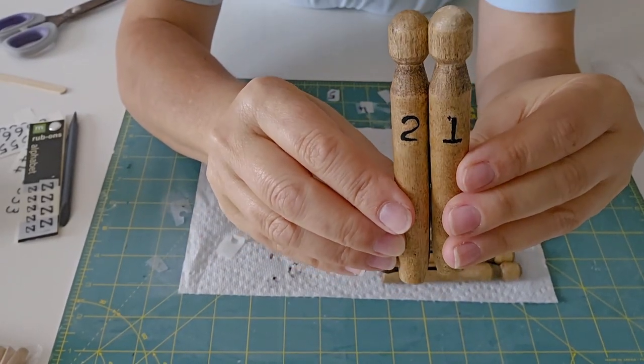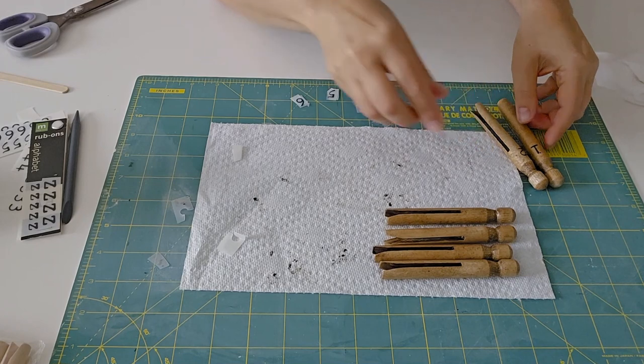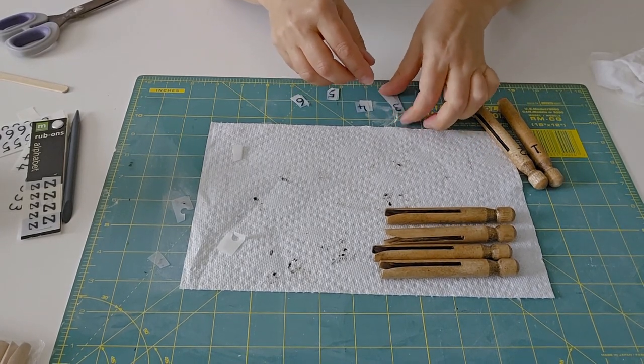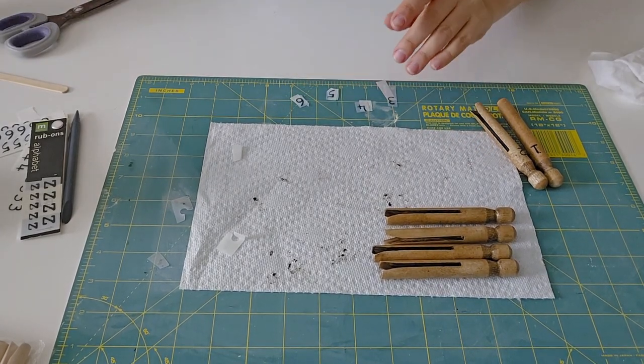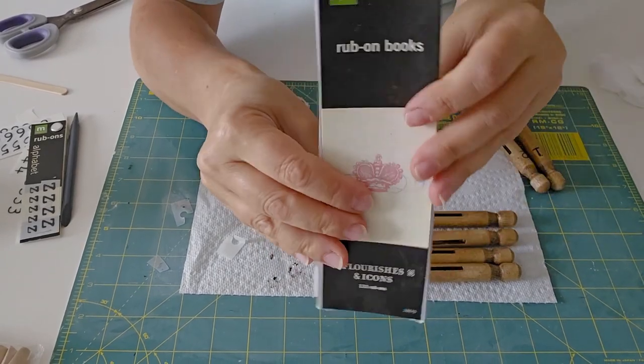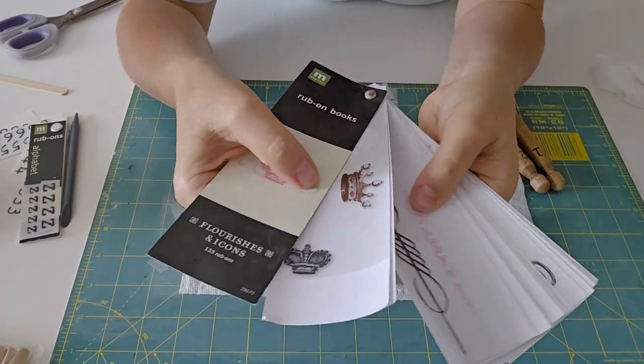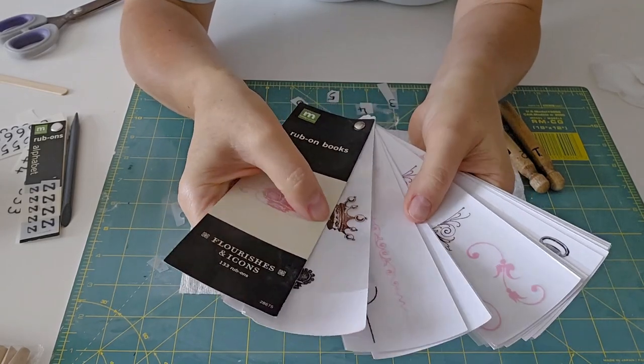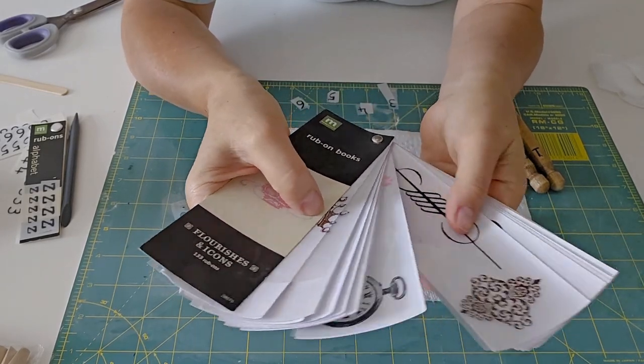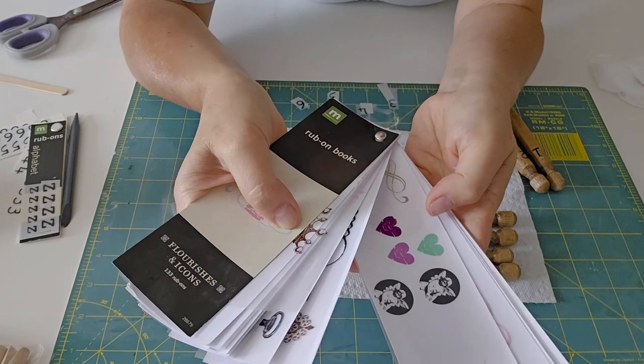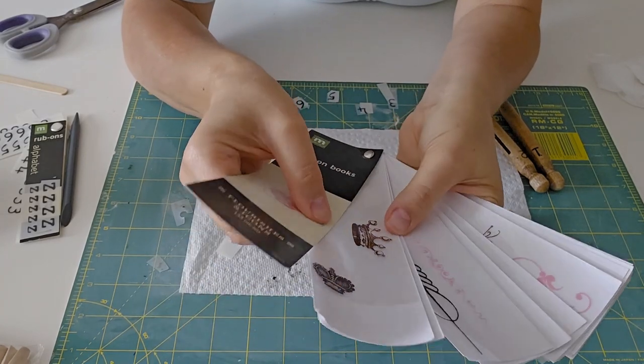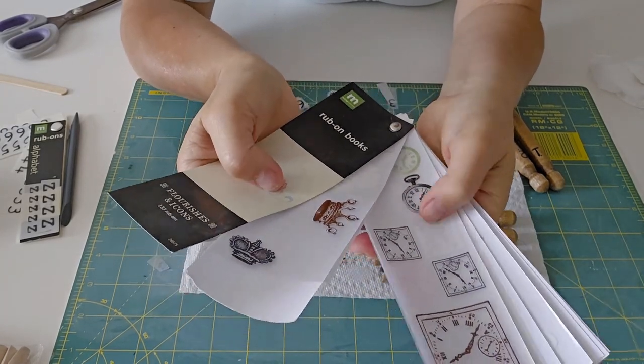One and two, cute right? Now like I said if you find rub-ons that are different or unique, I have this book of rub-ons that has crowns, some of the pieces are way too big for these clothespins, it has little clocks, hearts. I thought I saw some fleur-de-lis, there's some little clocks.